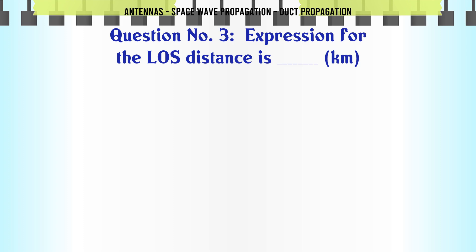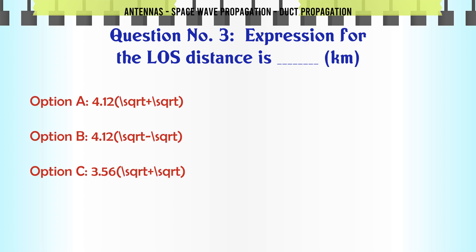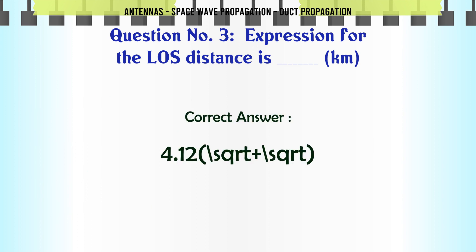Expression for the loss distance in kilometers is: A) 4.12(√h_T + √h_R), B) 4.12(√h_T + √h_R), C) 3.56(√h_T + √h_R), D) 3.56(√h_T + √h_R). The correct answer is 4.12(√h_T + √h_R).